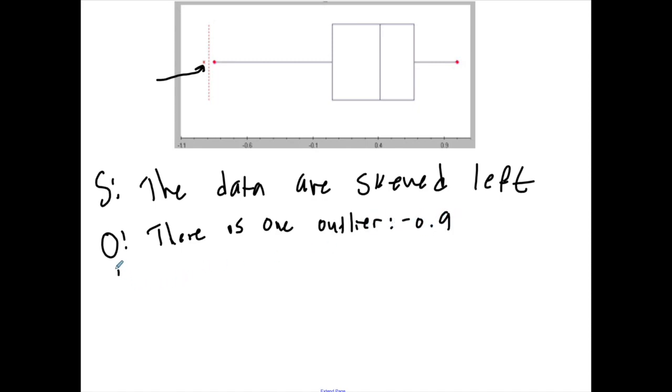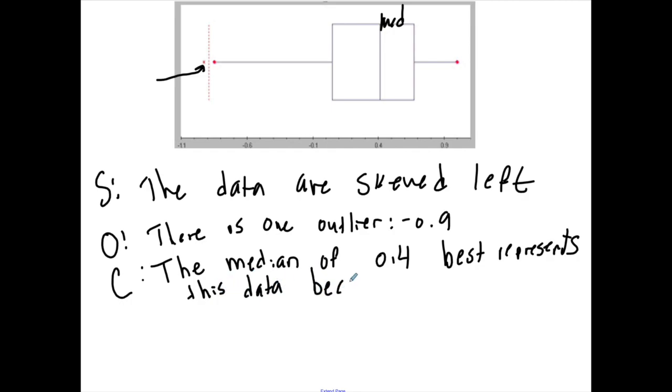Okay, center. So we're going to use the median for the center. The median is about 0.4. On a box and whisker it's easier to see that the median of 0.4 best represents this data because the data are skewed.